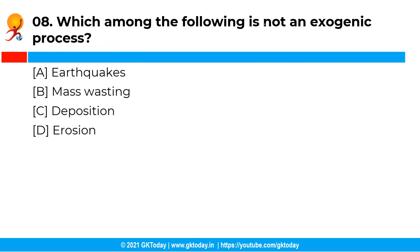The next question is: which among the following is not an exogenic process? The correct answer is option A, that is earthquakes. The processes which take place on the surface of the earth are called exogenic processes. Weathering, mass wasting, erosion, and deposition are exogenic processes.